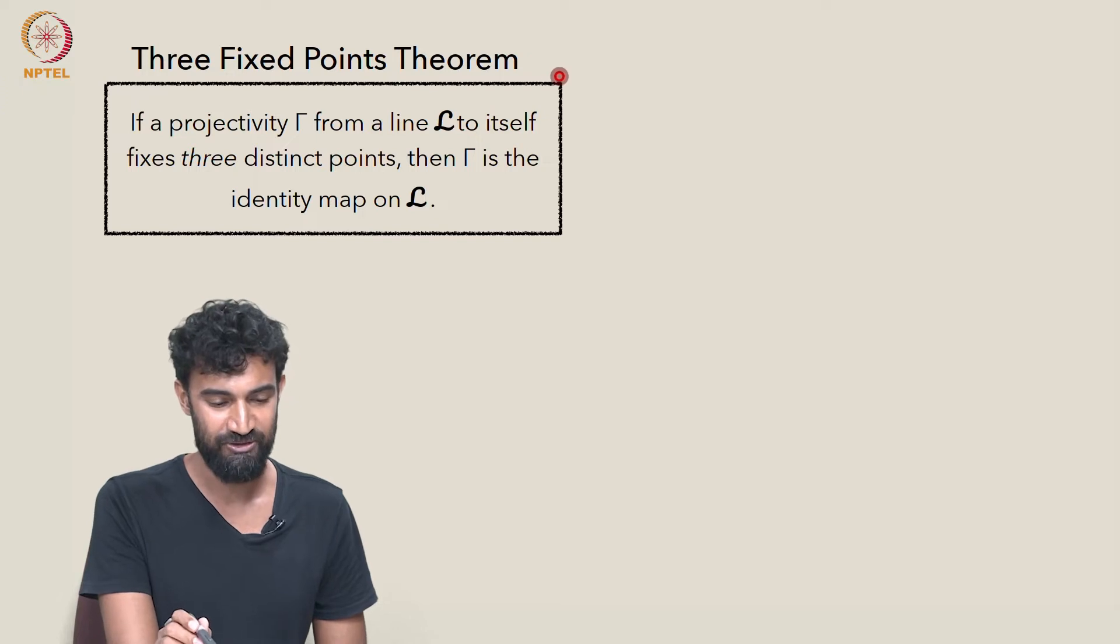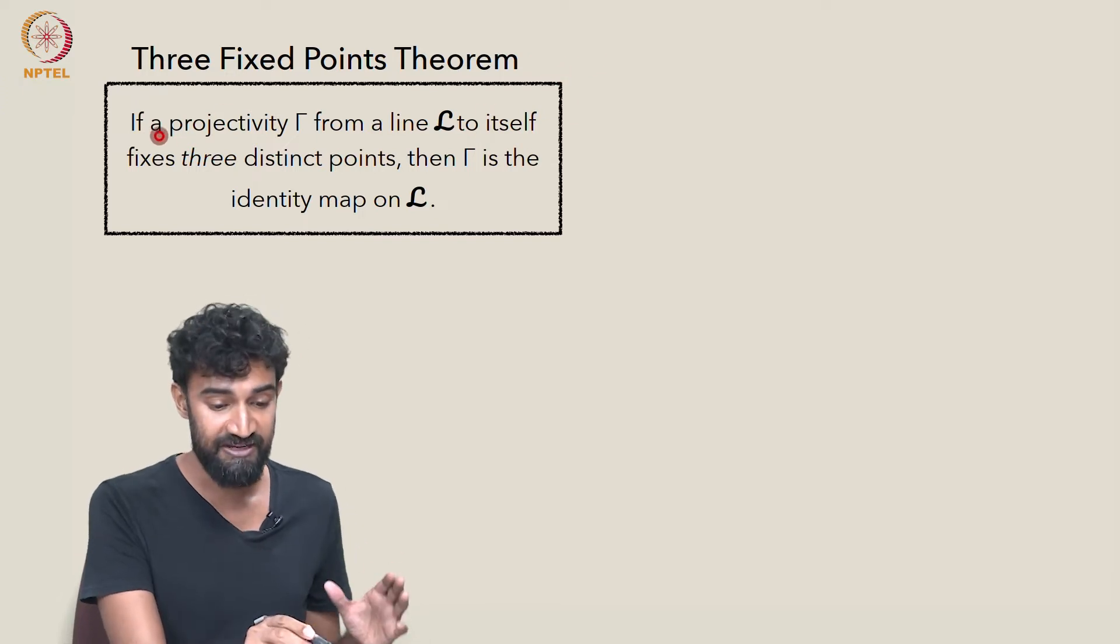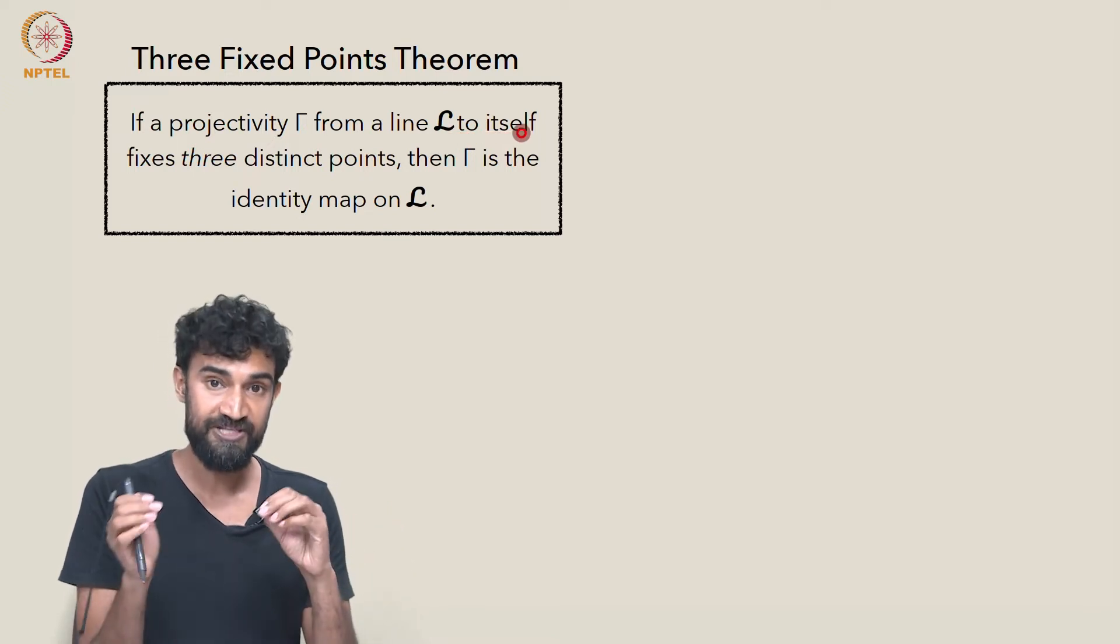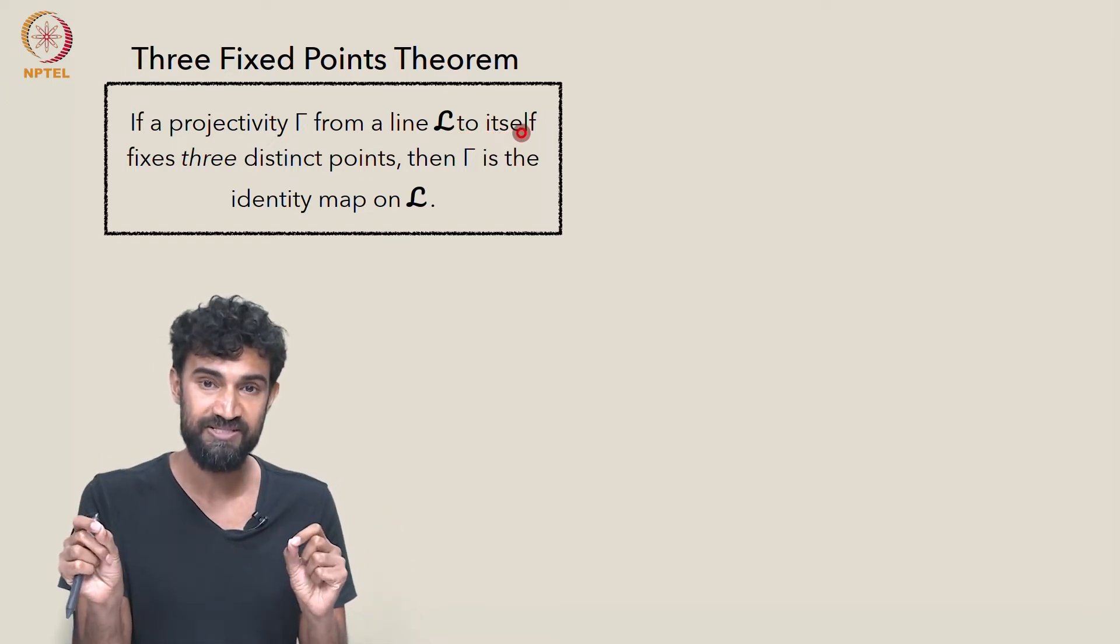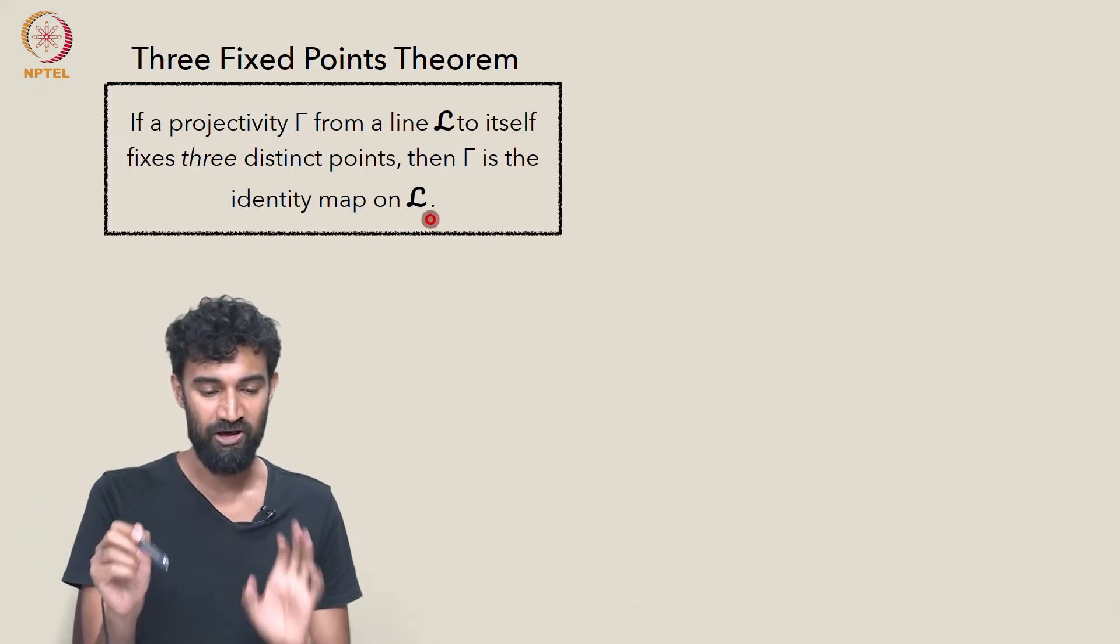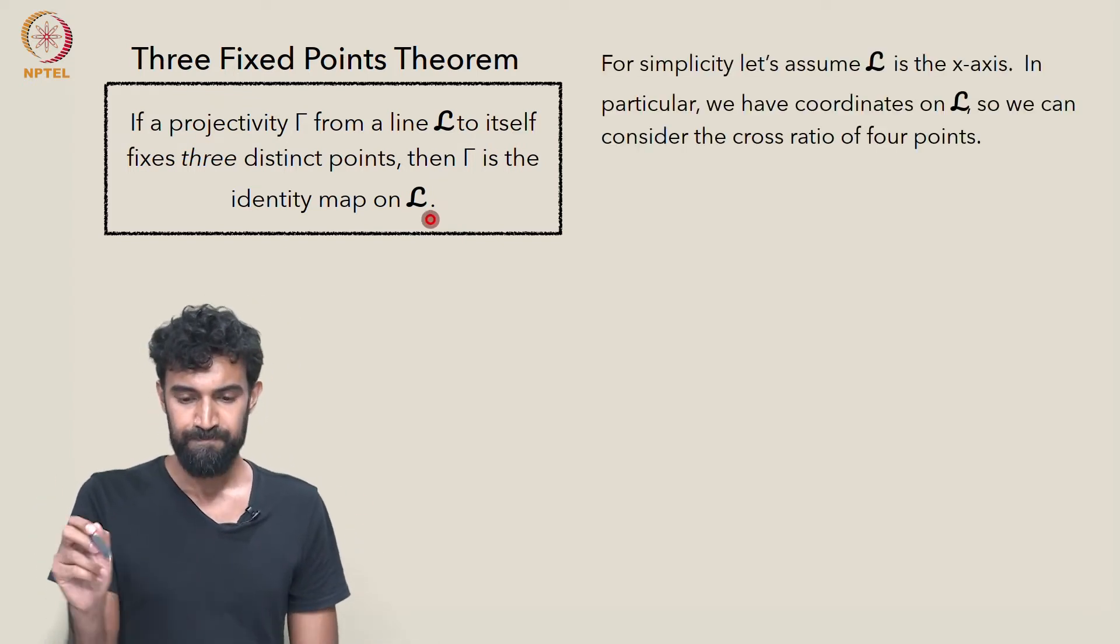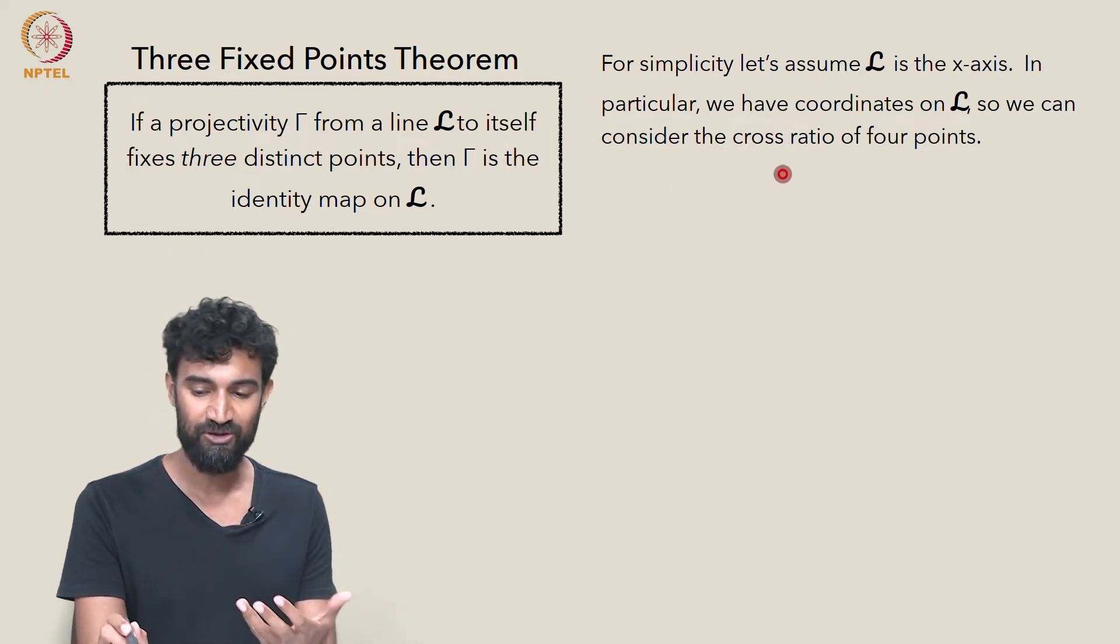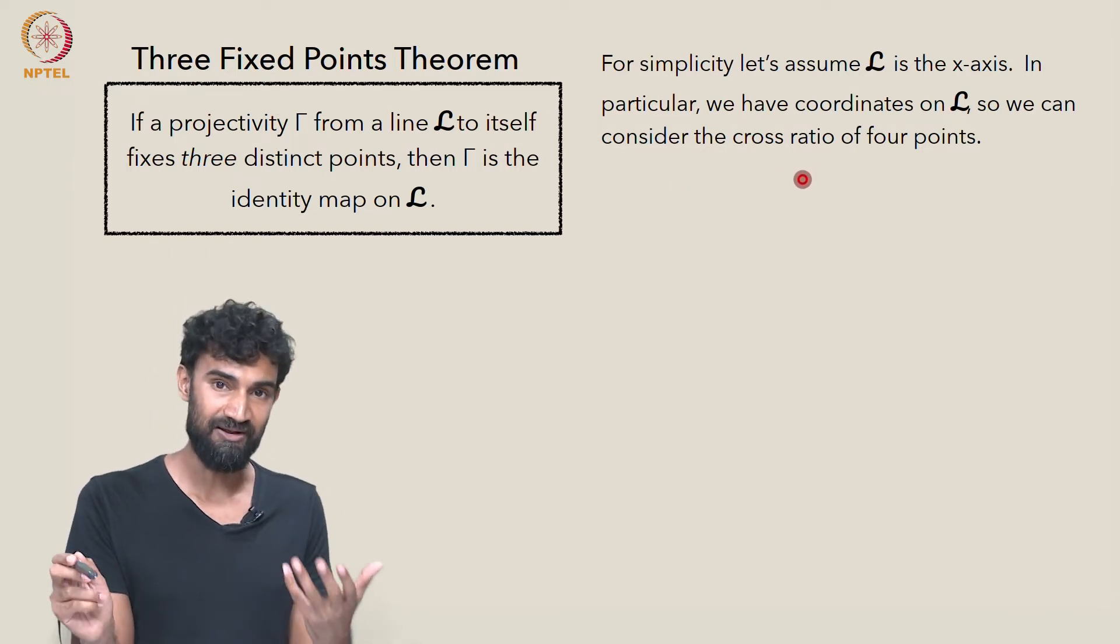So remember the three fixed points theorem, what it states? It states that if a projectivity gamma from a line L to itself fixes three distinct points, then it fixes everything. Then it's the identity map on L. So for simplicity, let's assume that L is the x-axis. And in particular, we have coordinates on L. So we can consider the cross-ratio of four points on L.